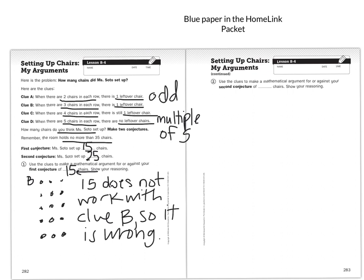Our second conjecture was 25. Does 25 fit with clue A? Is it odd? Yes, it is. What about clue B — when we put three chairs in each row, is there one leftover chair? Counting to 25 in groups of three... yes, it does fit clue B, there is one leftover chair. So now we're going to move on to clue C.